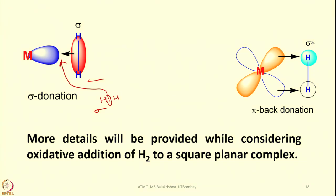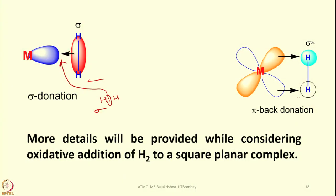The energy of sigma star is more or less comparable to the energy of non-bonding electrons present in a given metal complex whether it is tetrahedral, square planar or octahedral. In that case, electrons from metal orbitals can be promoted to sigma star and that is called backbonding. You can see here this is the sigma star, so this will be like backbonding. This becomes more clear in my next slide. More details I am going to provide once again when I consider oxidative addition of H2 to a typical square planar complex.